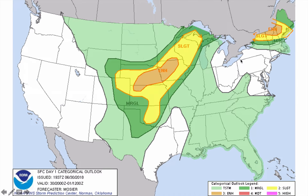This is what a modern Storm Prediction Center map looks like — color-coded with the new 'enhanced' category added. It goes: general thunderstorm risk, marginal risk, slight risk (15% or greater probability), enhanced, moderate, then high. Pretty much every day during thunderstorm season — March to September — some part of the country has a general or marginal risk. Maybe two or three days a week there's an enhanced risk. Only 10 to 15 times a year do we have a moderate risk, and only a handful of times — maybe one to five — do we see a high risk issued.